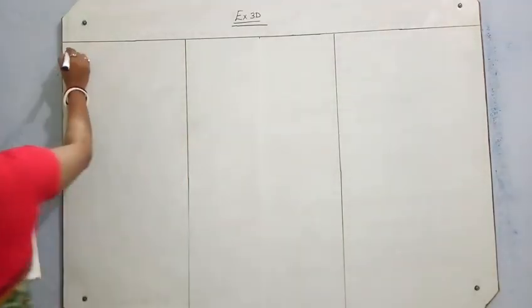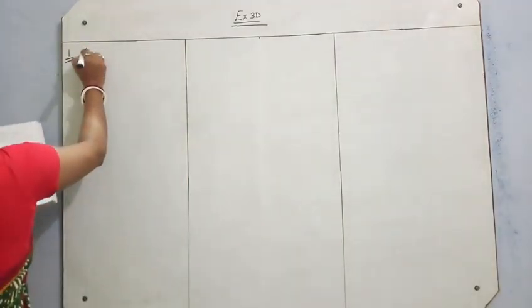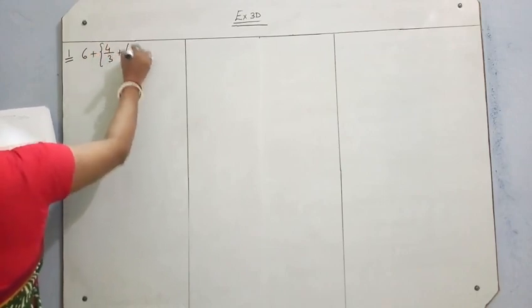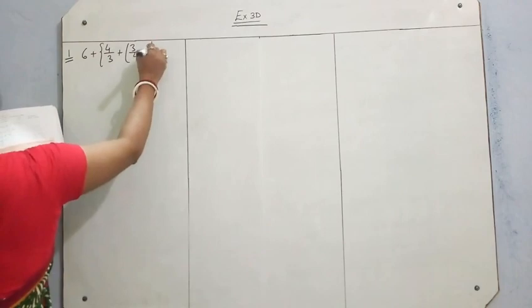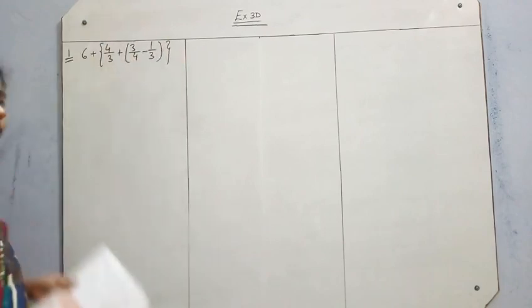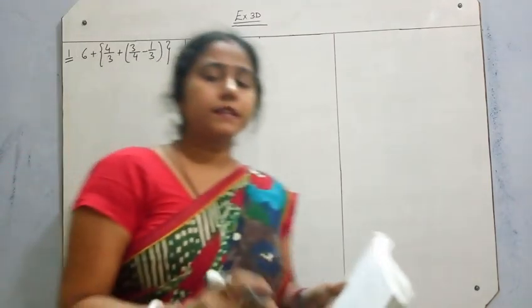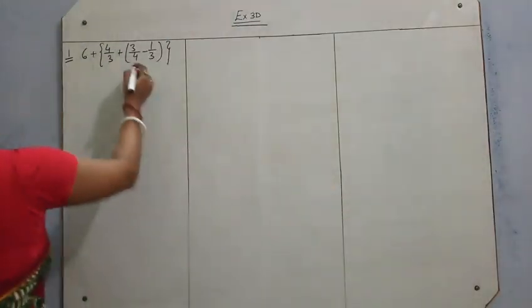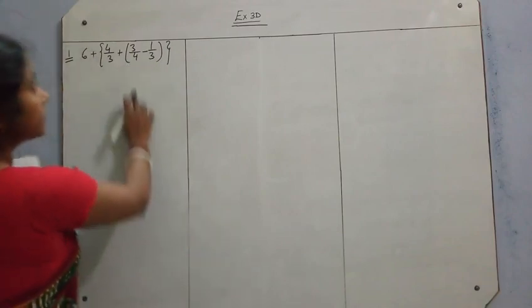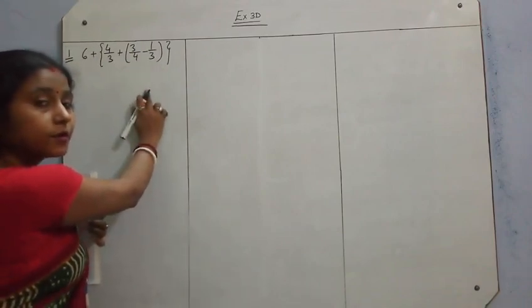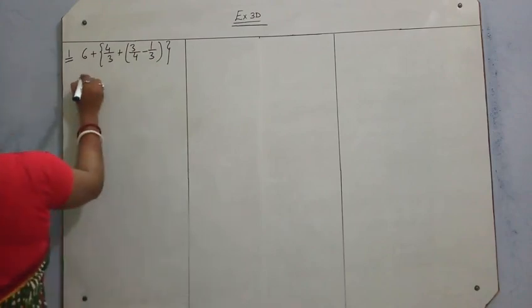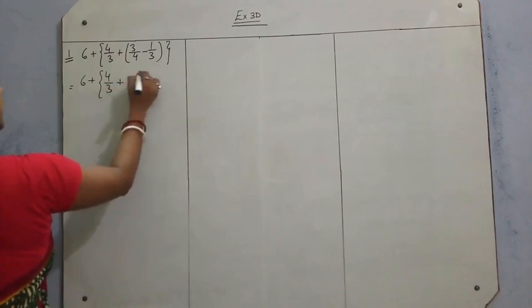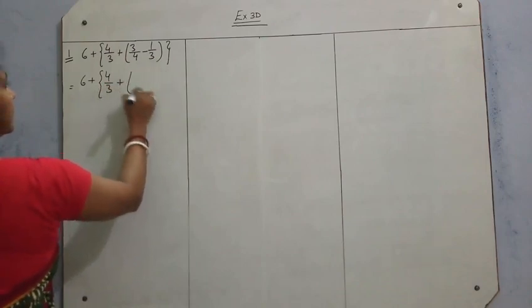So the first question is 6 plus {4/3 + (3/4 minus 1/3)}. This is a bracket question. So how to solve the brackets — in the previous class we studied, first of course we have to solve the small bracket. So 6 plus 4/3 plus 3 — we have to take LCM.